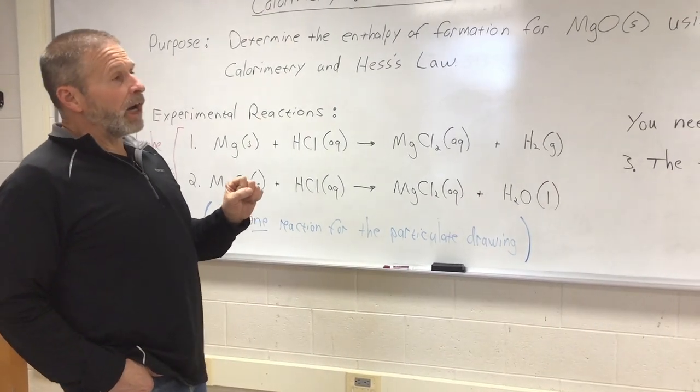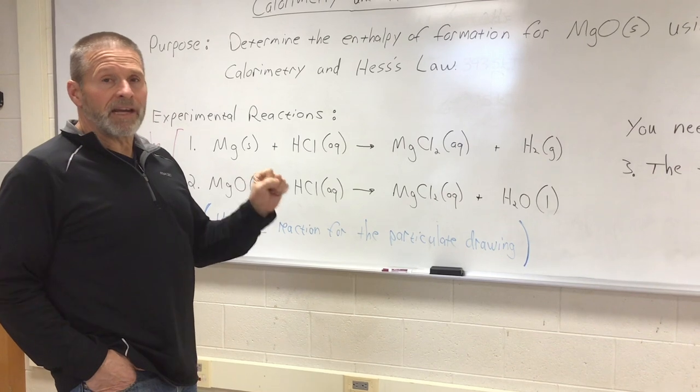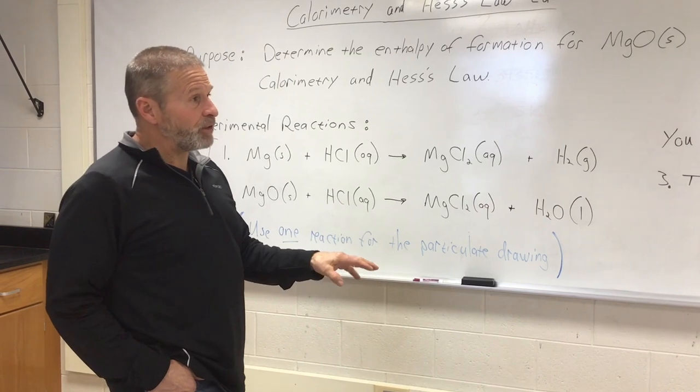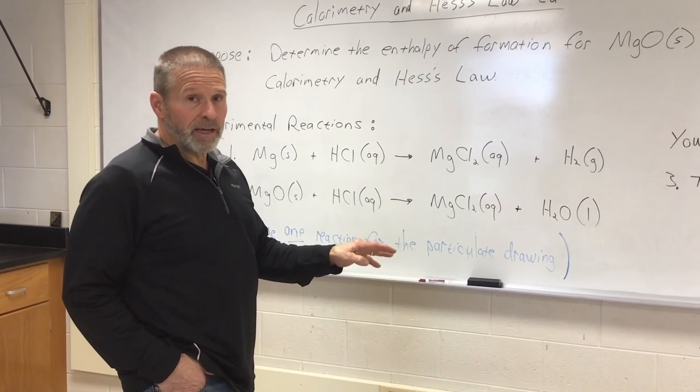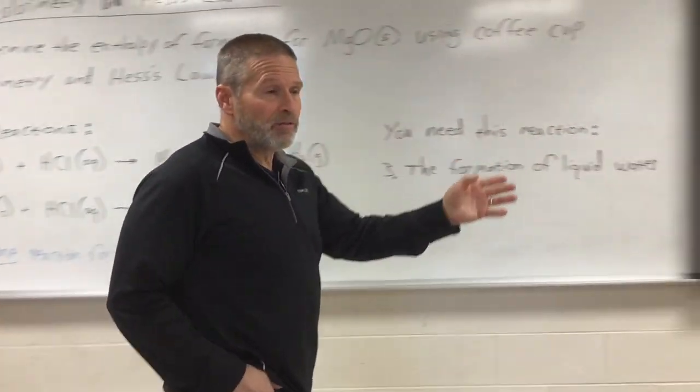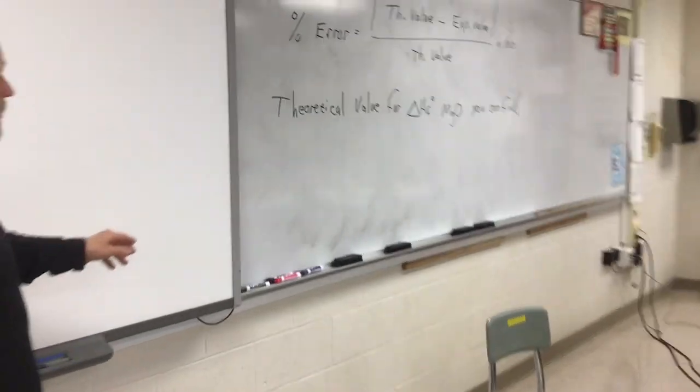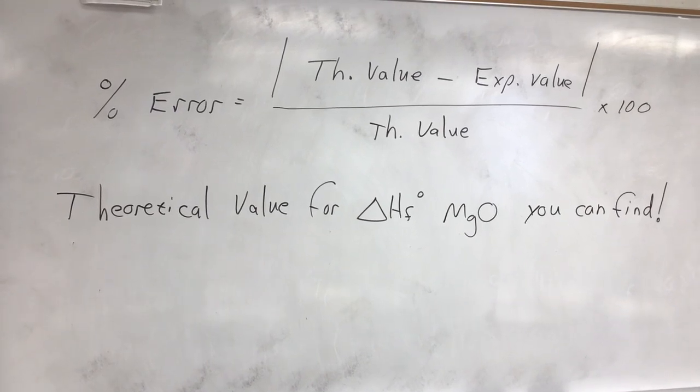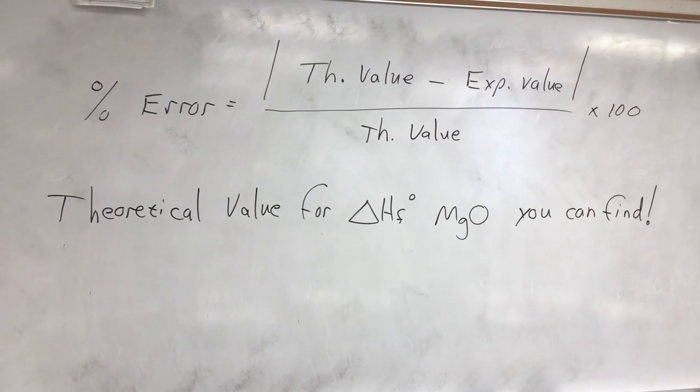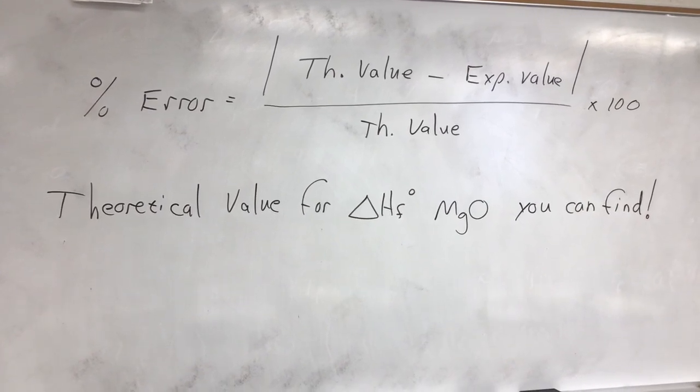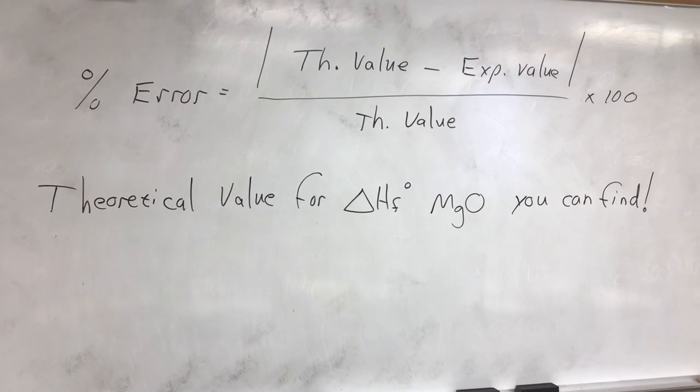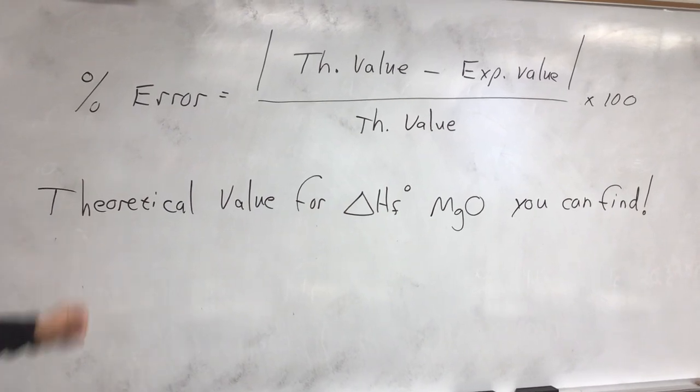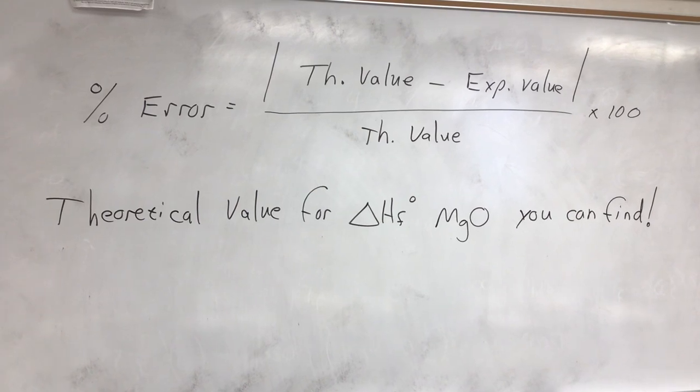Now, in the end, what you're going to do is figure out your percent error between the experimental value and the theoretical value for the enthalpy of formation of magnesium oxide. So, I don't know if you've dealt with percent error before. Percent error is the absolute value of your theoretical value minus experimental value over the theoretical value. You probably have used that before, but we wanted to just make sure you have it. And realize that you can look up the theoretical value for the enthalpy of formation of MgO.